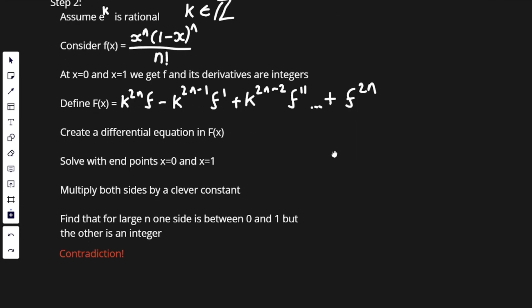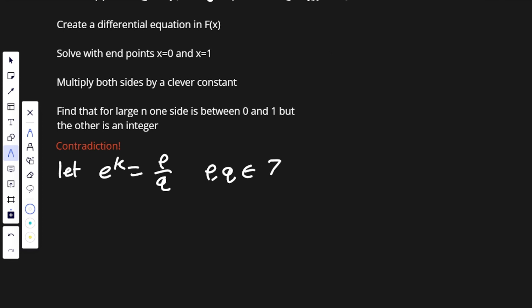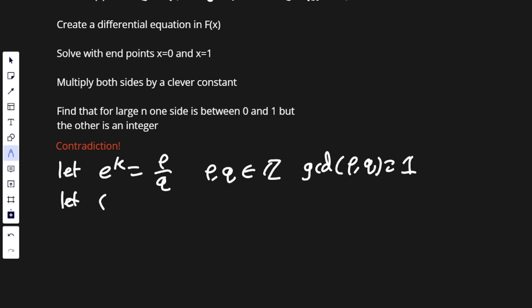Now for the main proof: we make our assumptions, letting e to the k equal p over q where p and q are integers and their greatest common divisor is 1. Next we define our function: we let f of x be equal to x to the n times (1 minus x) to the n, over n factorial.